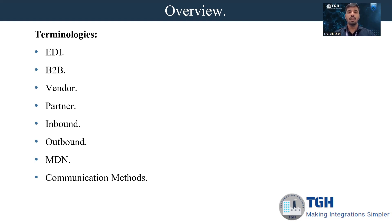We will have inbound and outbound transactions. Inbound refers to the flow of electronic documents from an external trading partner or vendor into an organization — in the sense, my company. Outbound refers to the flow of electronic documents from an organization to an external trading partner or vendor. MDN stands for Message Disposition Notification — it is an acknowledgement sent to the sender confirming the receiver got the data and that the messages were received and successfully decrypted.